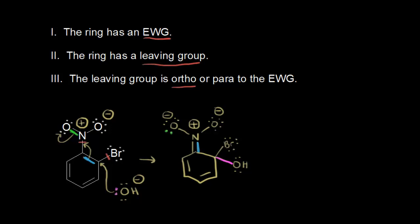The first step in this mechanism is the addition step — we add our nucleophile to the ring, adding electrons to it. That negative charge ends up on this oxygen, which is able to stabilize it since oxygen is very electronegative. The presence of the electron withdrawing group withdraws electron density from the ring, allowing some of that electron density to be temporarily stored on the electron withdrawing group, stabilizing this intermediate. This works because the electron withdrawing group is ortho to the leaving group.